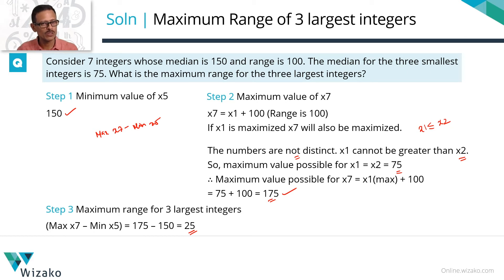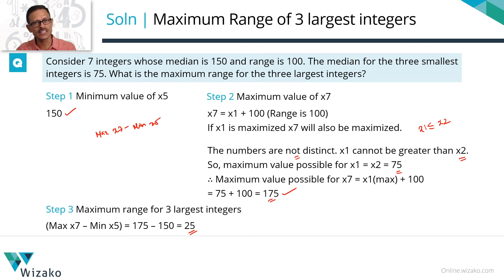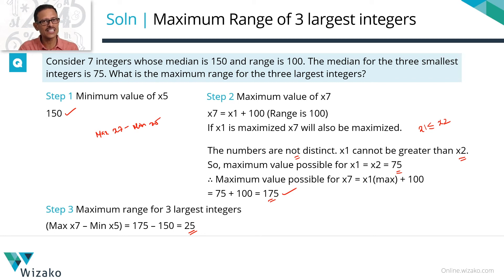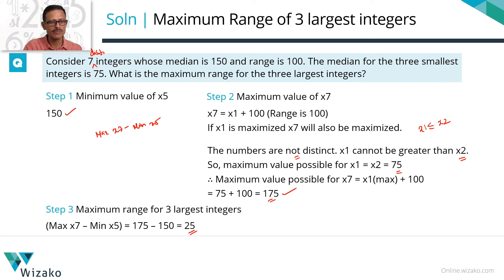I recommend closing the video now, picking the question, and trying to solve it yourself. If you get stuck, revisit this video. It's a good question to understand range, median, maximization, and whether numbers are distinct or not. You could try a variant: consider seven distinct integers and find the maximum range for the three largest. Report your answers for this variant in the comments.